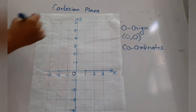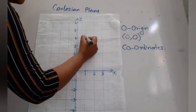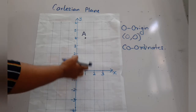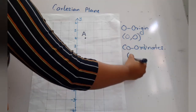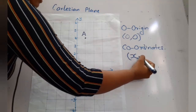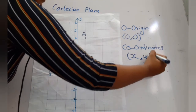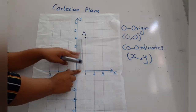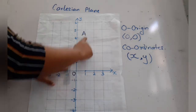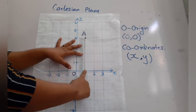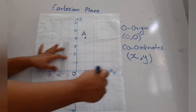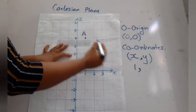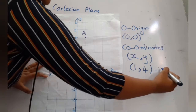For example, I am going to mark a point here — we will call it A. We mark this point, which is the coordinate, with two numbers: the first number comes from the x-axis and the second from the y-axis. In your square book you can easily identify it. Point A lies on positive one on the x-axis and positive four on the y-axis, so the coordinate of point A is (1, 4).